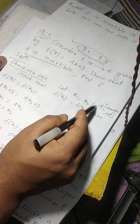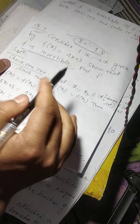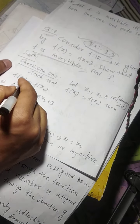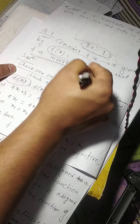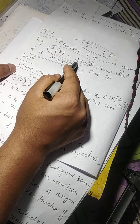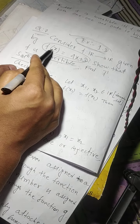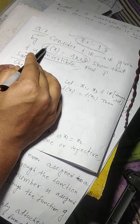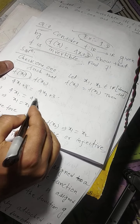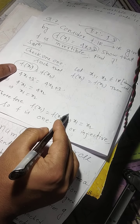Let x1, x2 belong to R such that f of x1 equals f of x2. Then f of x1 equals 4x1 plus 3 and f of x2 equals 4x2 plus 3. So 4x1 plus 3 equals 4x2 plus 3, the 3's cancel, giving 4x1 equals 4x2, therefore x1 equals x2.